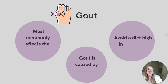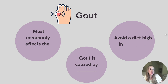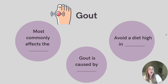Let's move on to gout. This is a type of arthritis that is very painful and can attack many different joints, but it most often affects the big toe. Gout is caused by the deposition of monosodium urate, or MSU, crystals in joints and is often associated with hyperuricemia, which is an elevated level of uric acid in the blood. The presence of these crystals in the joints can lead to pain and inflammation.